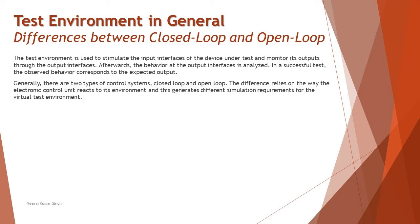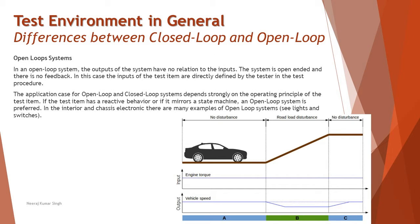Let's start with the open loop system. In an open loop system, the output of the system has no relation to the inputs. The system is open-ended and there is no feedback. In this case, the inputs of the test items are directly defined by the tester in the test.